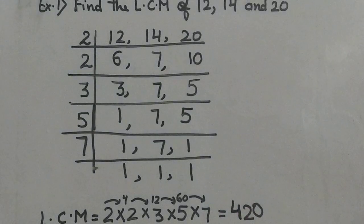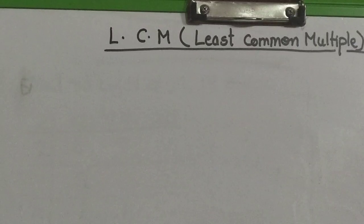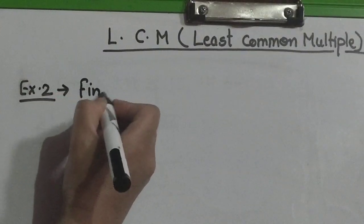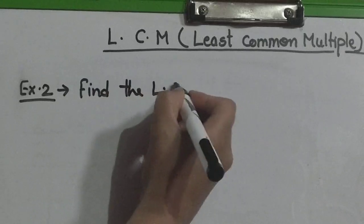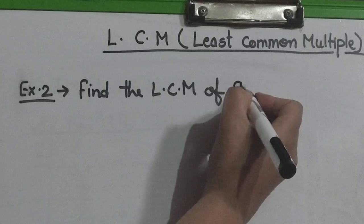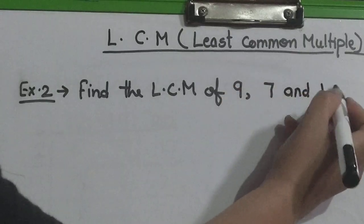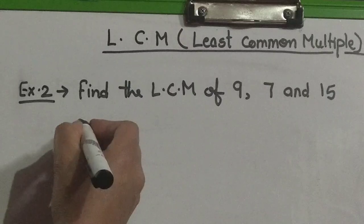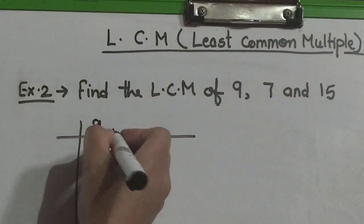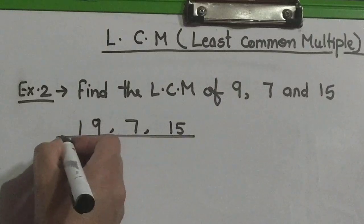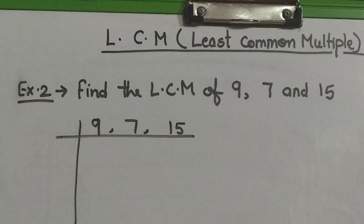One more example for you. Find the LCM. The first step: write the given numbers in the horizontal line separating them by commas — 9, 7, 15. The first smallest prime number is 2. We check if we can divide any of the numbers — 9, 7, 15 — by 2. We cannot divide any of them by 2.